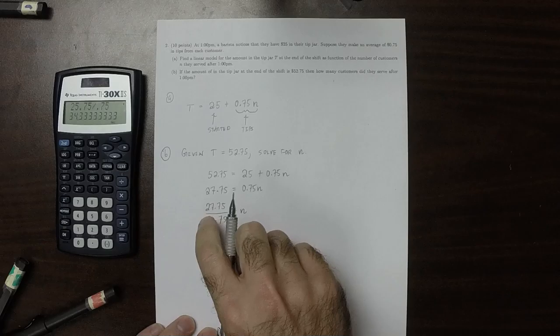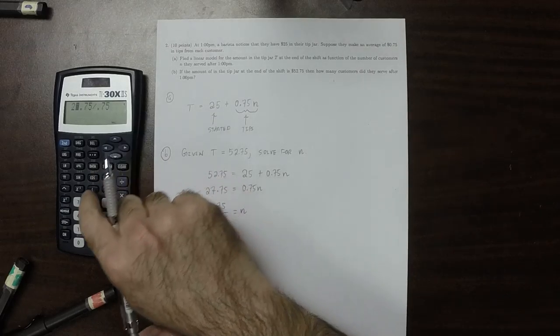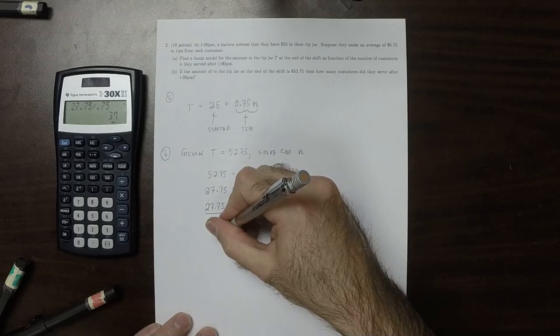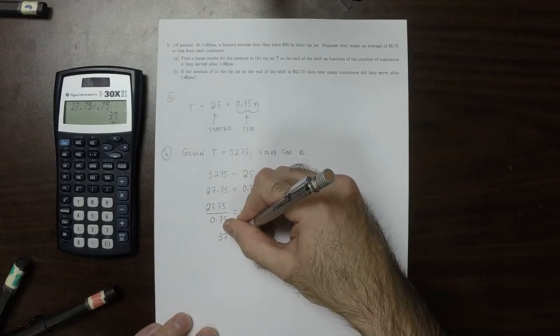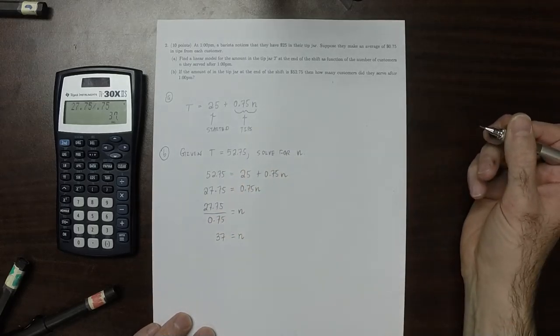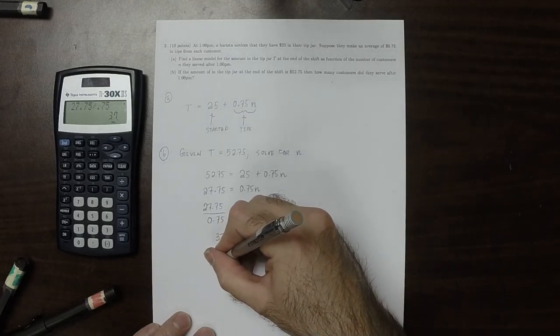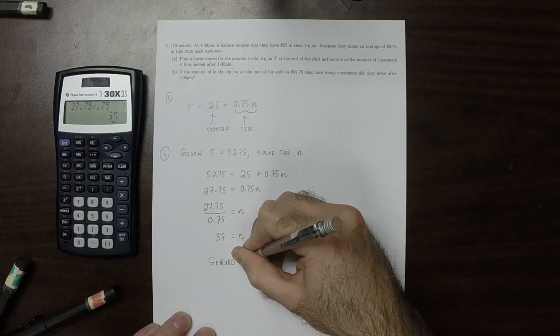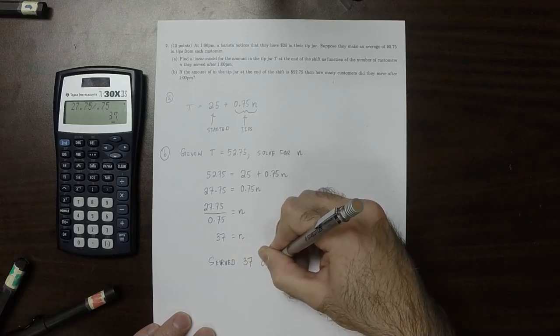Oh no, 27.75. I typed 25 into the calculator. So n is 37. They served 37 customers.